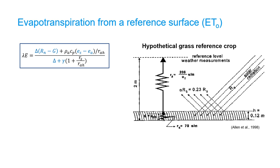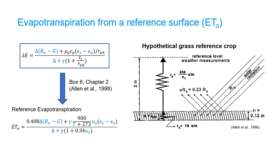The FAO56 method is based on the Penman-Monteith equation for a hypothetical reference crop that resembles a uniform well-watered grass crop that has fixed crop height, albedo, and surface resistance. This hypothetical reference crop is defined as a crop with an assumed crop height of 0.12 meter, a fixed surface resistance of 70 seconds per meter, and an albedo of 0.23.